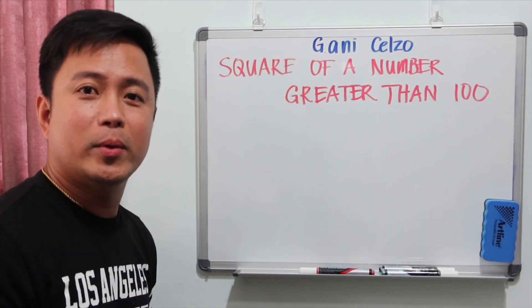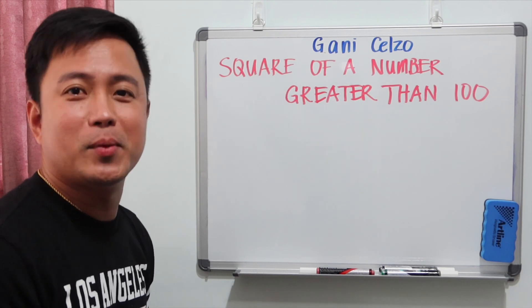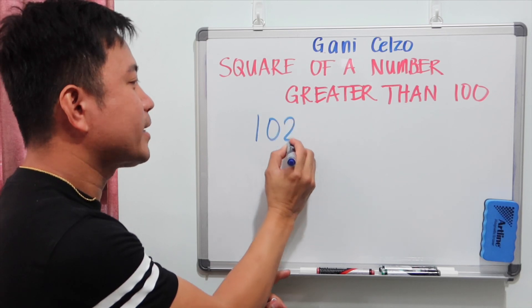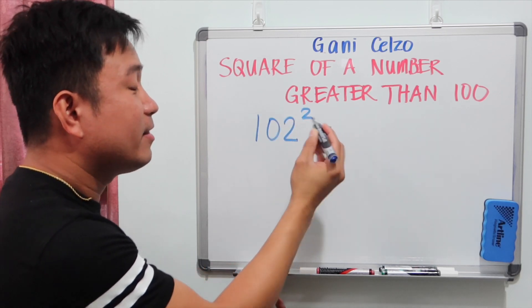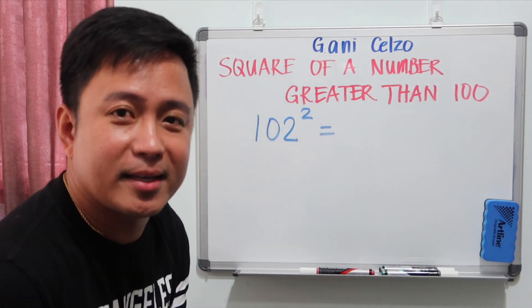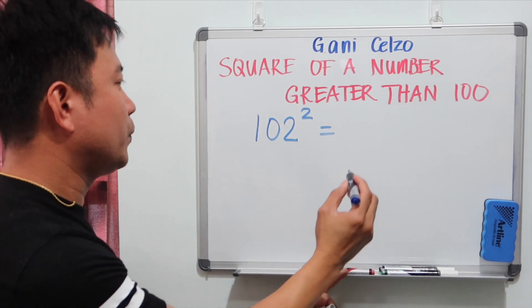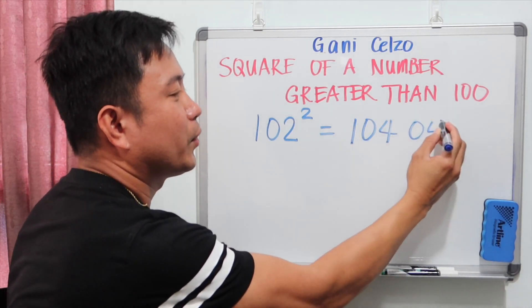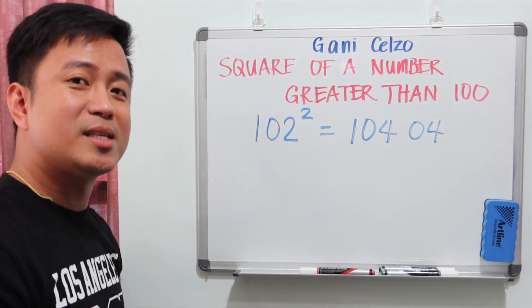Now we will explore numbers that are more than 100. So for example, if we have 102 to the second power, this can be solved in five seconds. And the answer to this will be 10404. And I will give the explanations in a bit.